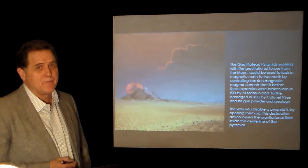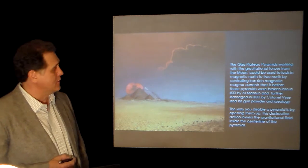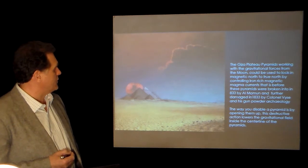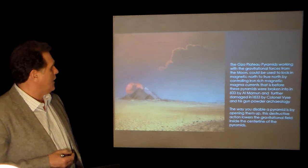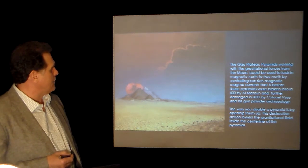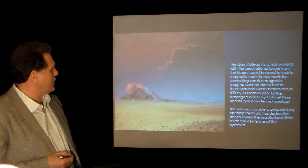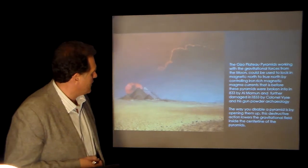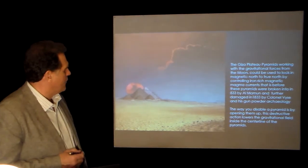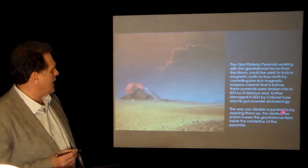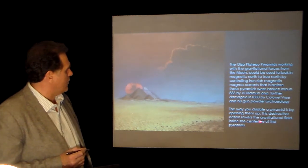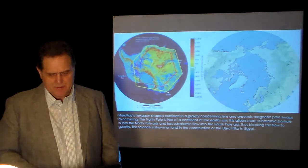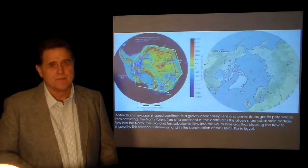To increase the control of the planet, that's what we need to do — put these pyramids back together. Giza Plateau pyramids working with gravitational forces from the moon could be used to lock in magnetic north to true north, controlling iron-rich magma currents — before the pyramids were broken into in 833 by Al-Ma'mun, and further damaged by Colonel Weiss in 1833. The way you disable a pyramid is by opening them up. This destructive action lowers the gravitational field inside the center line of the pit.